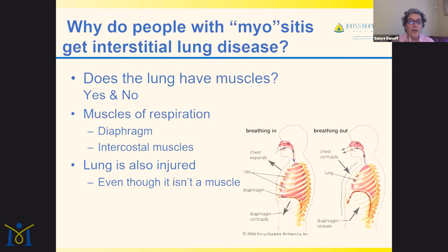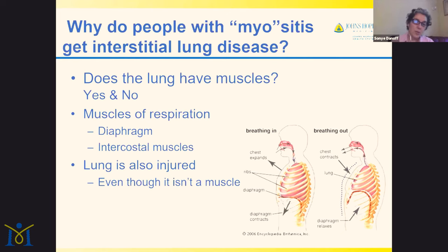Why do people who have myositis get interstitial lung disease? "Myo" means muscle and "-itis" means inflammation. A lot of people ask why someone with a muscle disease would get something that involves the lung. The lung does have muscles of breathing, including the diaphragm — the large muscle that helps with breathing in and out — and the intercostal muscles between the ribs. But myositis actually affects the lung itself. The name is a little misleading, because the inflammation can damage the lung even though the lung is not a muscle.